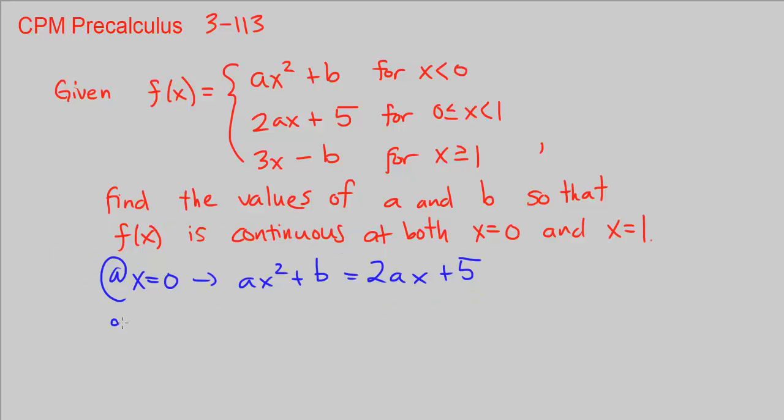Also, at x equals 1, that's this other transition. Then we know that this piece has to equal the other for it to be continuous. 2ax plus 5 has to equal 3x minus b. So here we have a system of two equations and we have two unknowns, and we've got to solve for a and b.